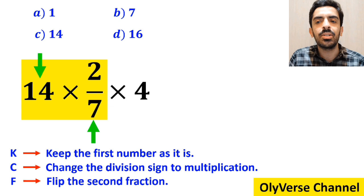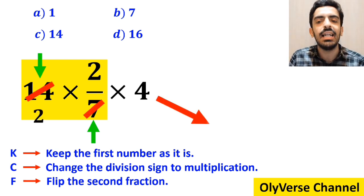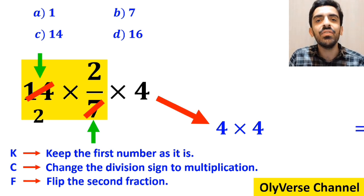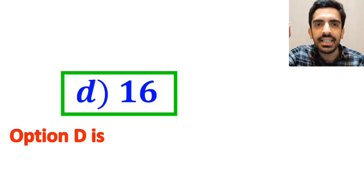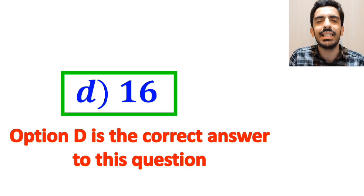As you can see on the screen, the number 14 simplifies with the 7 in the denominator, and this expression simplifies to 4 multiplied by 4, which finally gives us the answer 16. Therefore, option D is the correct answer to this question.